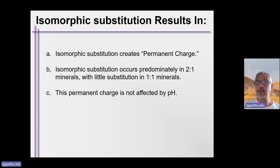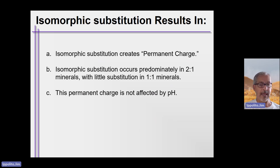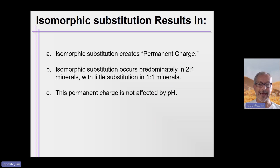The third key point about isomorphic substitution is that this permanent charge is not at all affected by the pH of the soil. The pH can be 10 and you'll have a negative charge on the clays; the pH can be 0 and you'll still have a negative charge on the clays. It is not affected by pH.